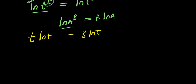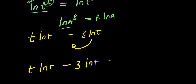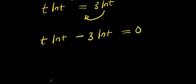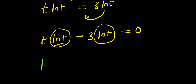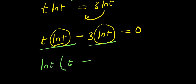Now, what next can we do? We can decide to move this over here — it becomes negative. So I have t times natural log of t minus 3 times natural log of t equals 0. There is natural log of t in both terms, so I can decide to factor that out. I have natural log of t times — when I divide by natural log of t, I get t — then minus — when I divide by natural log of t, I get 3 — and this equals 0.